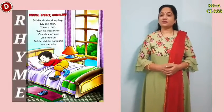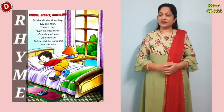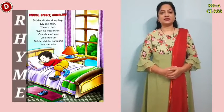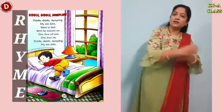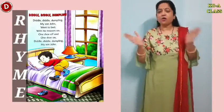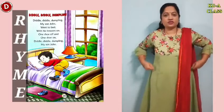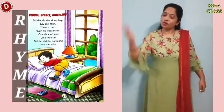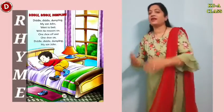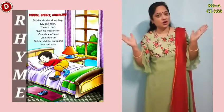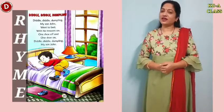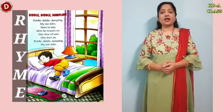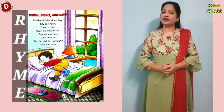Children, now it's time to recite our rhyme Diddle Diddle Dumpling with actions. The title of my poem is Diddle Diddle Dumpling. Diddle Diddle Dumpling, my son John, went to bed with his trousers on, one shoe off and one shoe on, Diddle Diddle Dumpling, my son John. In this way, children, you have to recite this rhyme. Learn it, make your video on this rhyme and send it to me. See you in your next class. Bye-bye.